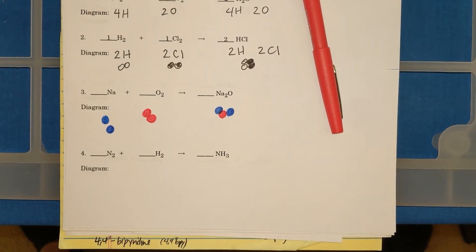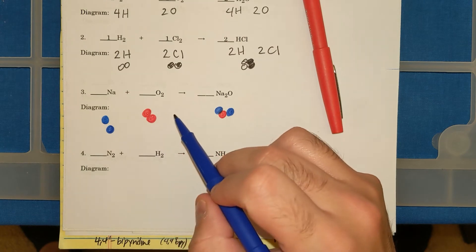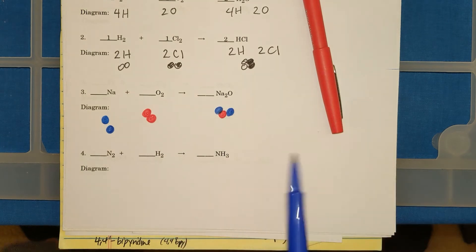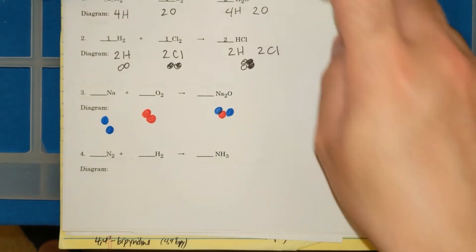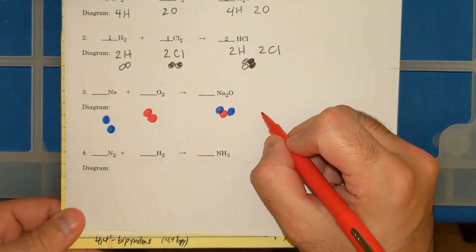Am I balanced? Well, I have 2 Na's, 2 O's on the left side. 2 Na's, 1 O on the right side. And as I mentioned in a previous video, can I just do this?